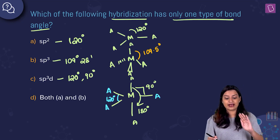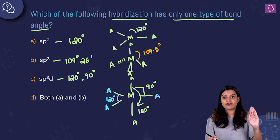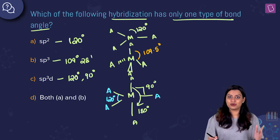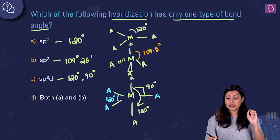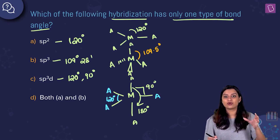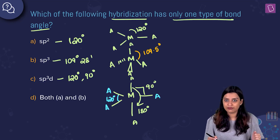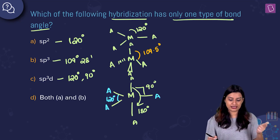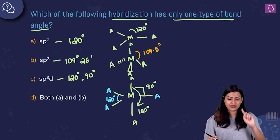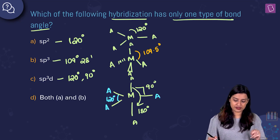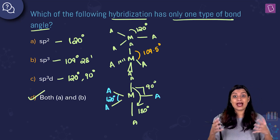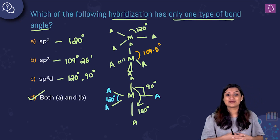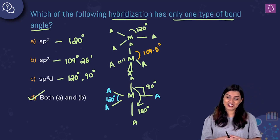So sp³d is the hybridization that has different types of bond angles — typically described as 120° and 90°. The question asks which hybridization has only one type of bond angle, and the answer is both sp² and sp³. Therefore option D, both a and b, is the correct answer.